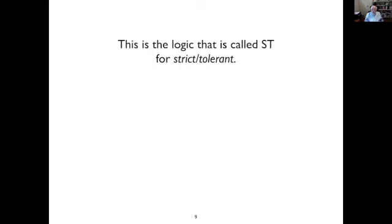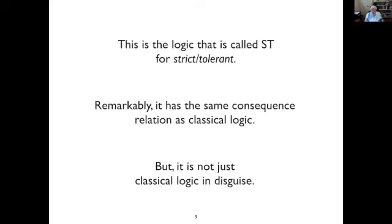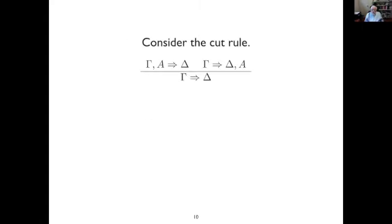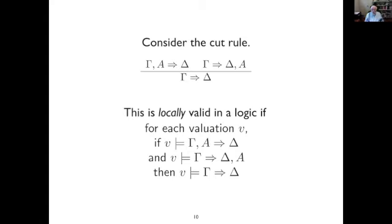This is what's called the logic ST. It has the same consequence relation as classical logic. Despite the fact that the consequence relations are the same, they in no plausible way are the same logic. Consider the cut rule — cut is locally valid in classical logic, but it's not locally valid in ST. So the two logics agree at the consequence level, but they differ at the meta-consequence level.